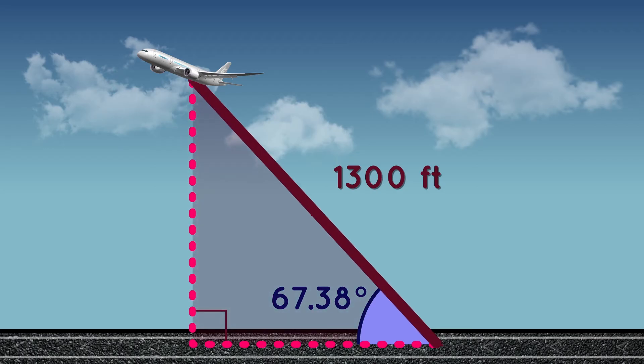Well, we know that this side across from the right angle is the hypotenuse, and that's 1,300 feet. And the height of our triangle is opposite our angle. We'll label that side x. We have opposite and hypotenuse, which means we can use the sine function.